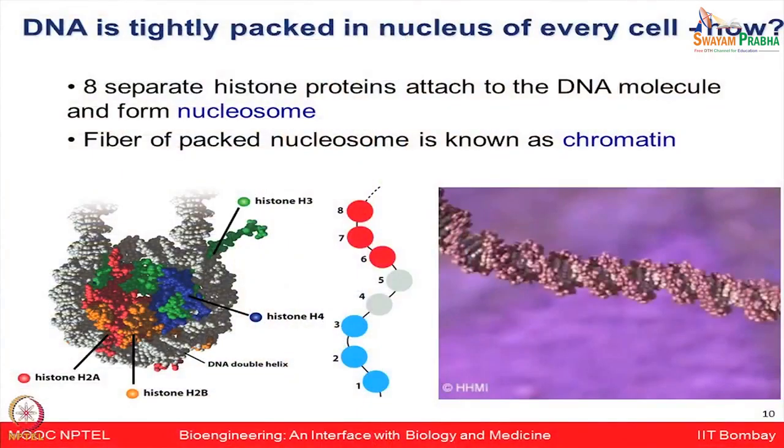An interesting fact is how so much DNA content is tightly packed in the nucleus of every cell. In addition to DNA, there are histone proteins attached to the DNA molecules. Eight histone proteins — H1, H2A, H2B, H3, and H4 — along with the DNA molecules form a complex called nucleosomes. The fiber of these packed nucleosomes is known as chromatin, and these chromatins get condensed before the process of mitosis starts.